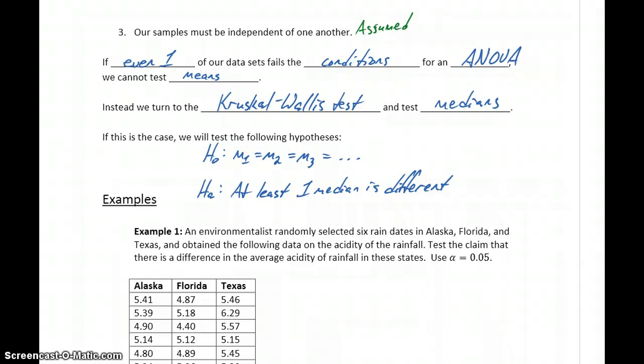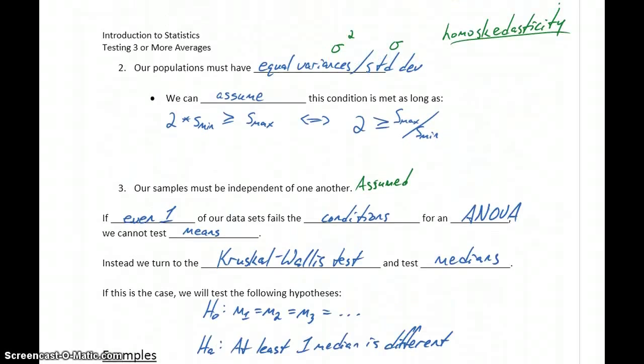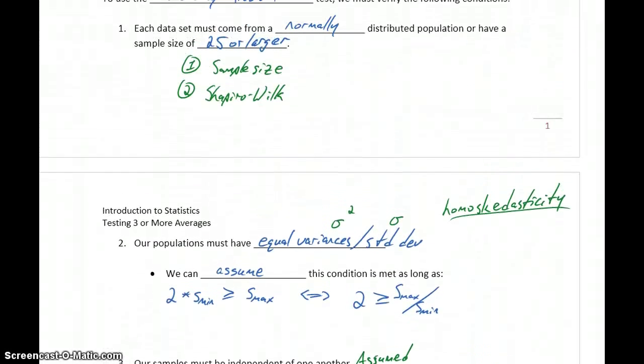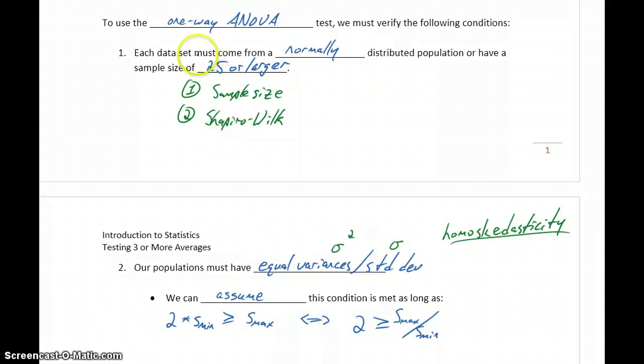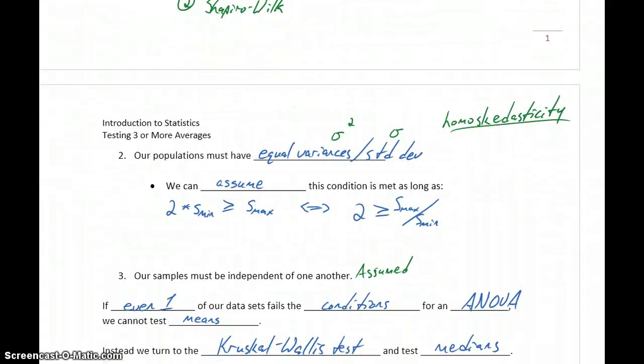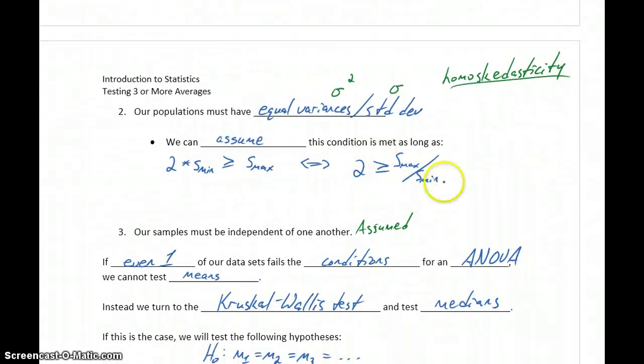We have those two conditions that we need to verify, and we need to make sure we verify it for each data set. We need to make sure that each data set comes from a normal population, or has a large enough sample size. Then, we need to calculate the sample standard deviations for every single data set, identify the smallest and largest values, take the ratio, and make sure that result doesn't exceed two.